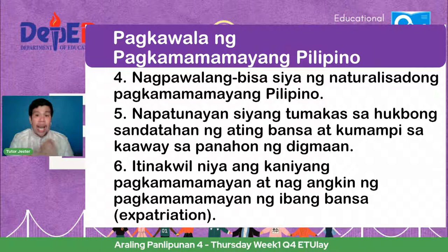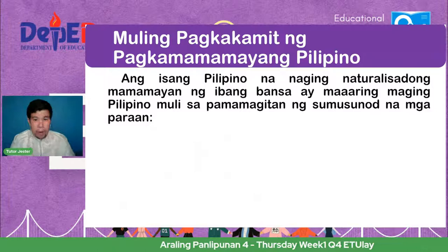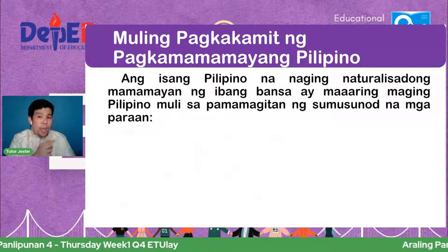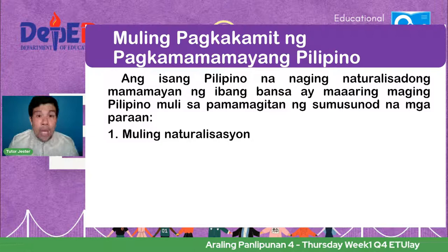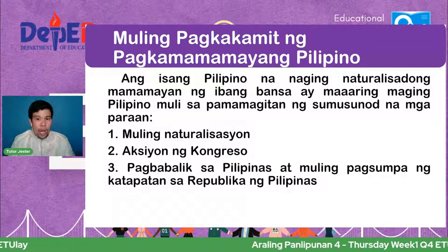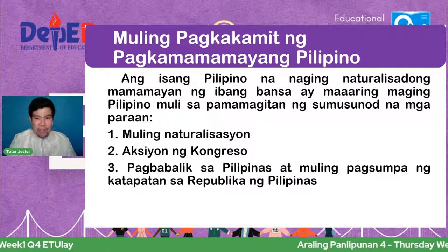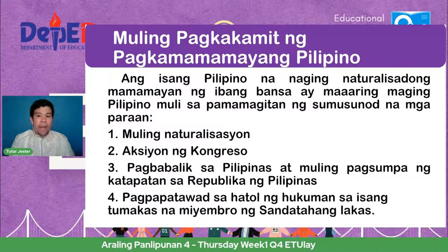Ang muling pagkakamit ng pagkamamamayang Pilipino — kung nawala, maaaring din naman muling makamit ang pagkamamamayan. Ang isang Pilipino na naging naturalisadong mamamayan ng ibang bansa ay maaaring maging Pilipino muli sa pamamagitan ng: una, muling naturalisasyon; ikalawa, aksyon ng kongreso; ikatlo, pagbabalik sa Pilipinas at muling pagsumpa ng katapatan sa Republika ng Pilipinas; at ika-apat, pagpapatawad sa hatol ng hukuman sa isang tumakas na miyembro ng sandatahang lakas.